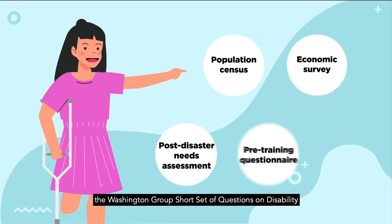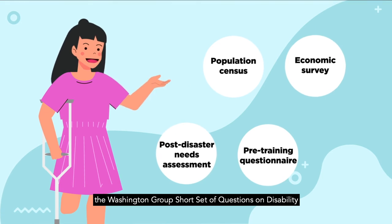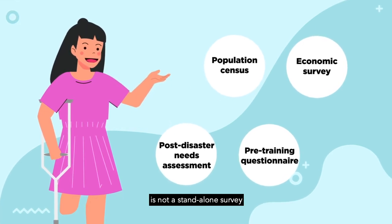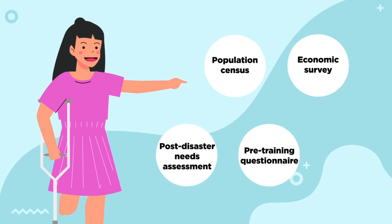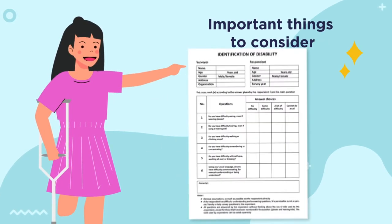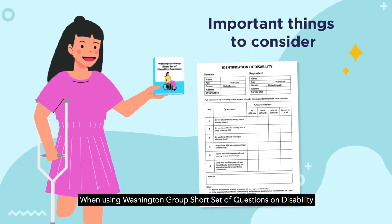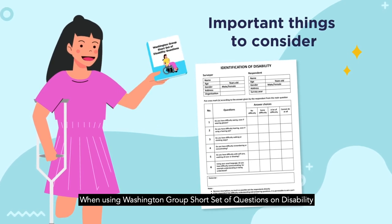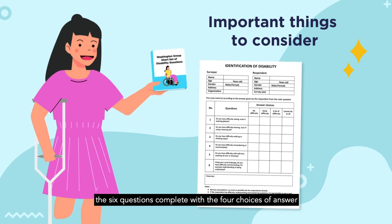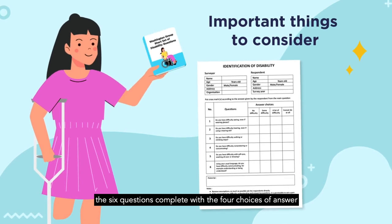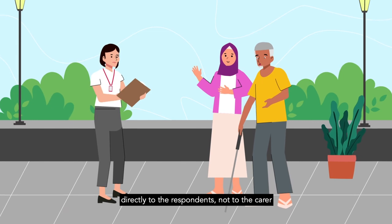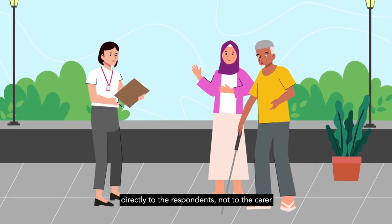Often, the Washington Group Short Set of Questions on Disability is not a standalone survey, but is part of a larger survey for different purposes. When using it, always ask all six questions complete with the four answer choices. Ask the questions directly to the respondents, not to a caregiver.